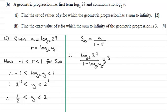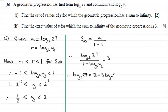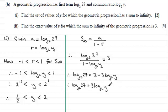We have a fractional equation so we multiply both sides by 1 minus log base 2 of y to get log base 2 of 27 equals 3 times 1, which is 3, minus 3 times log base 2 of y. Since this is a log equation, we bring all terms containing logs to one side by adding 3 log base 2 of y to both sides, giving log base 2 of 27 plus 3 log base 2 of y equals 3.